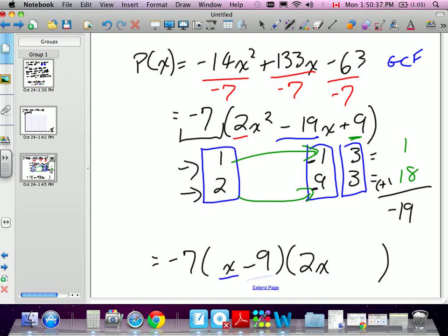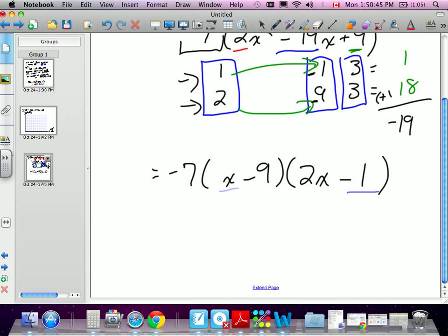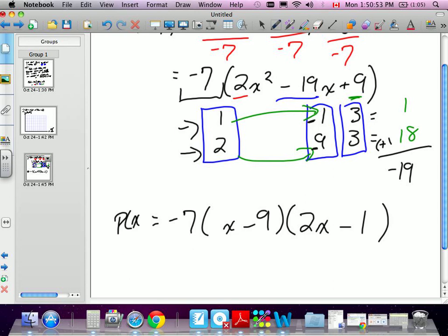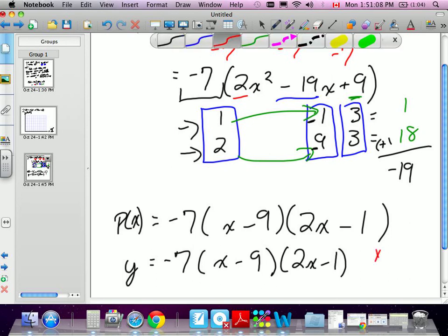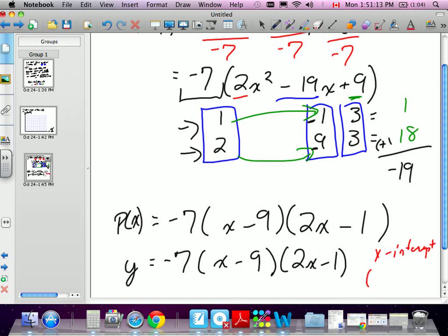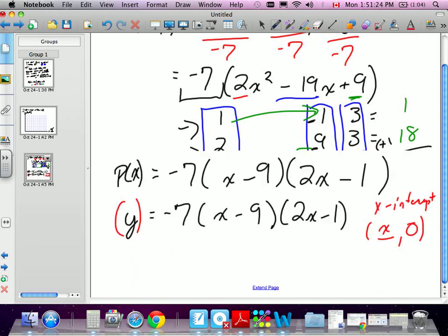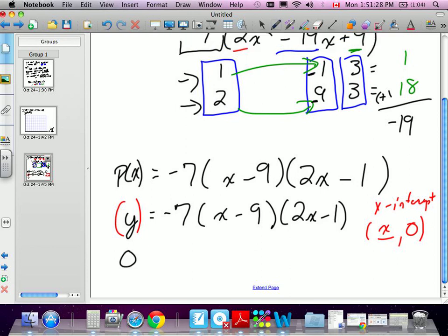And the reason I factored them is because we're trying to find an x-intercept. So remember, we started with P(x), and we can replace P(x) with just y for graphing, because y is our other axis. And what we're trying to solve is our x-intercepts. So if you guys recall, to find an x-intercept, we don't know what our x-value is, but we do know the y-value is 0 when we're finding x-intercepts. So I'm going to be replacing y with 0.